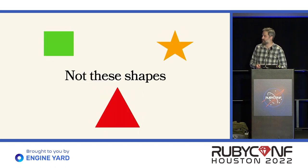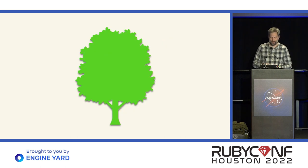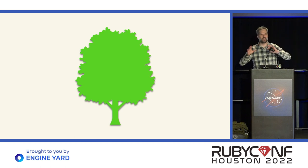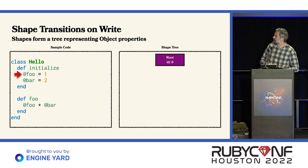It's not these types of shapes — in fact there's really only one shape. It is a tree data structure. Rather than just explaining it, we're going to try building it so we can kind of see what it looks like.